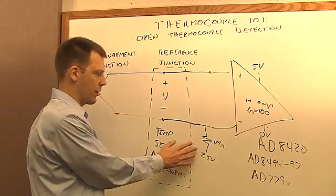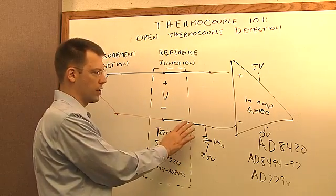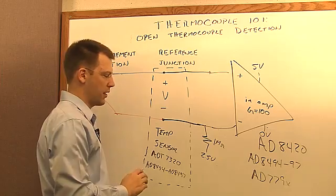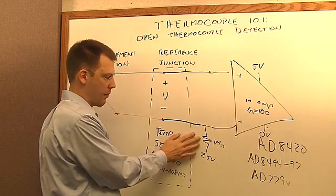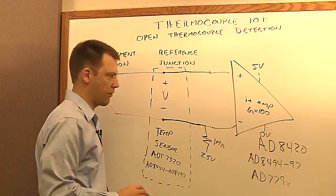So in the last session, we talked about how we need to set the common mode voltage so that it's within the range of the instrumentation amplifier, and we did that by using this one megaohm resistor connected to two and a half volts.